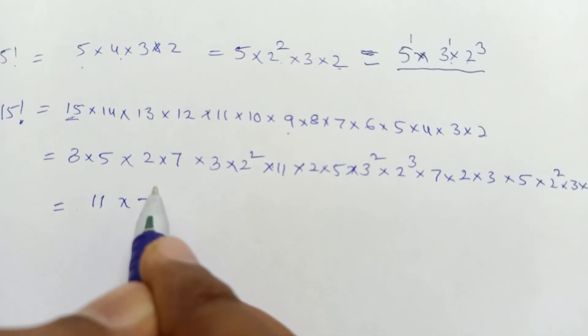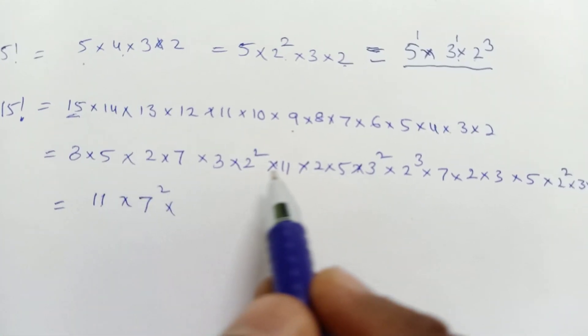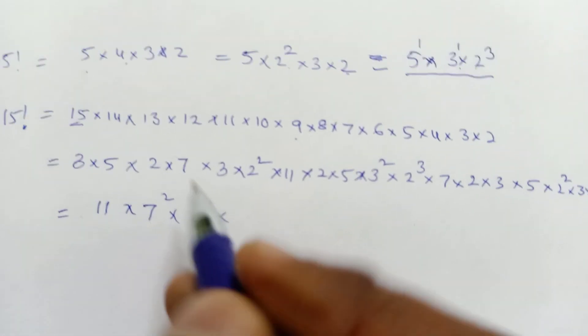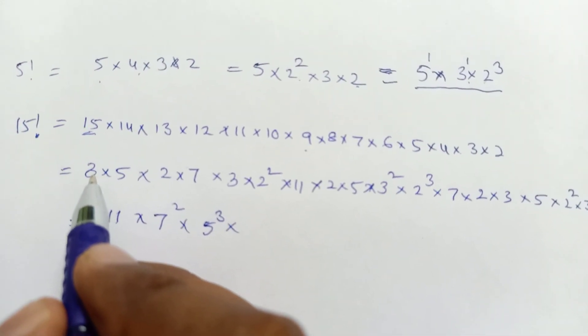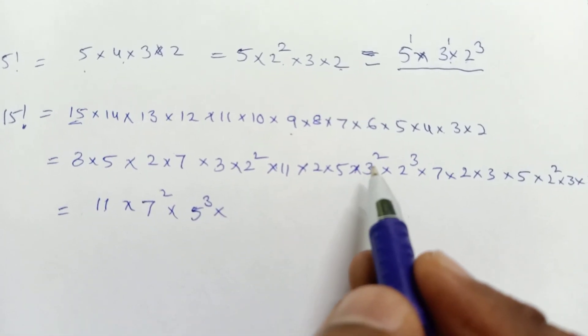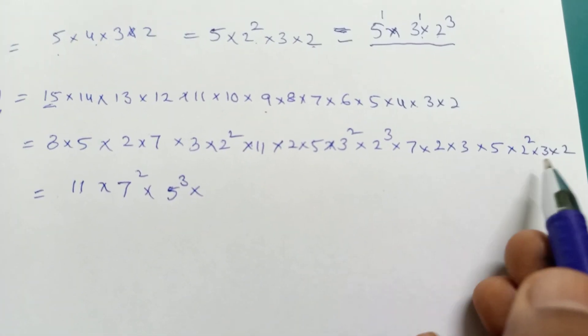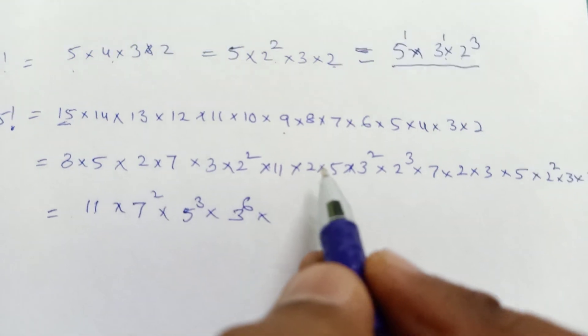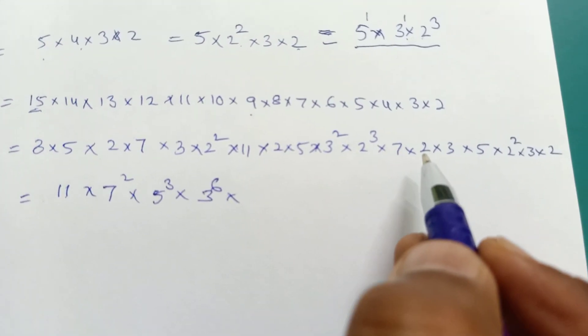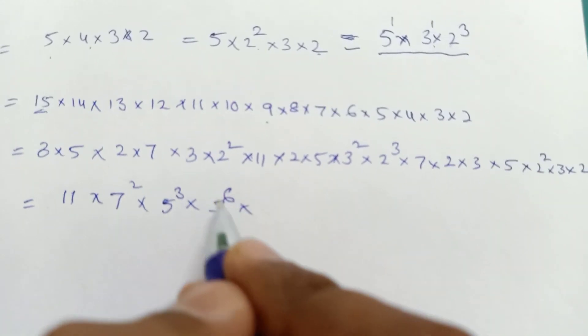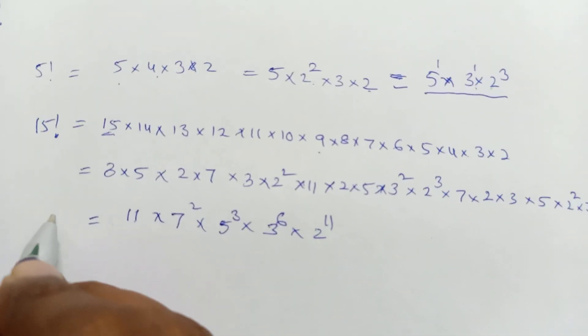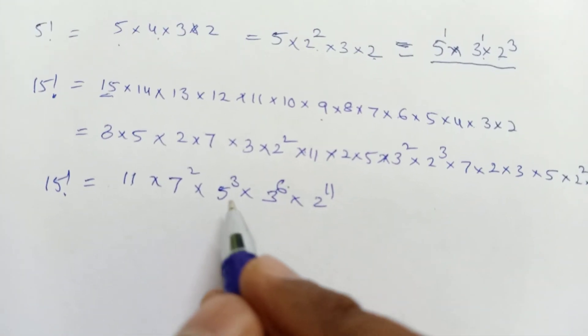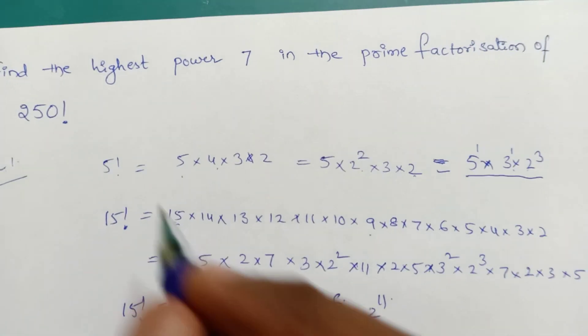For prime number 7, we have 7 squared. For prime number 5, we have 5 cubed. For 3, we have 3 to the power of 6. For 2, we have 2 to the power of 11. So in the prime factorization of 15 factorial, we have 3 to the power of 6 and 2 to the power of 11.